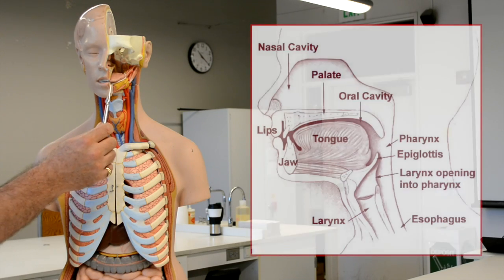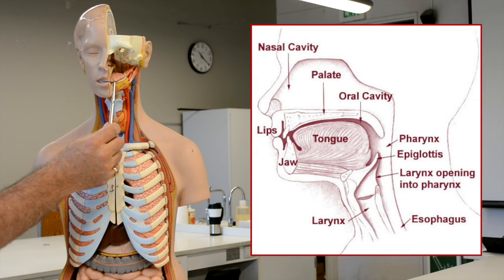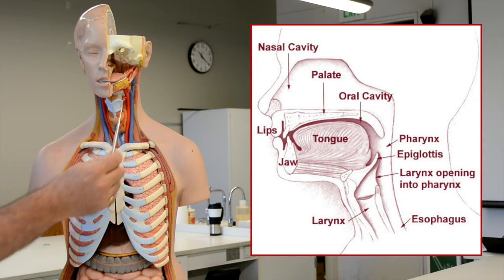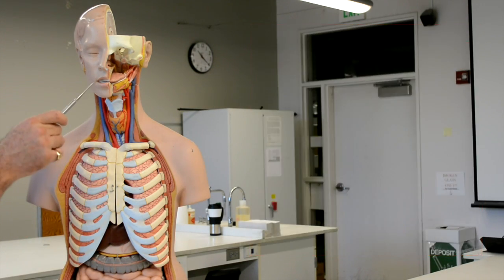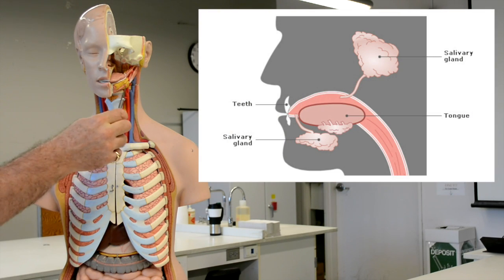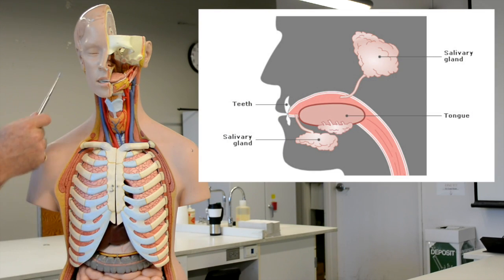In the mouth, we have the oral cavity and then we have some accessory organs: the teeth, the tongue, and the salivary glands.